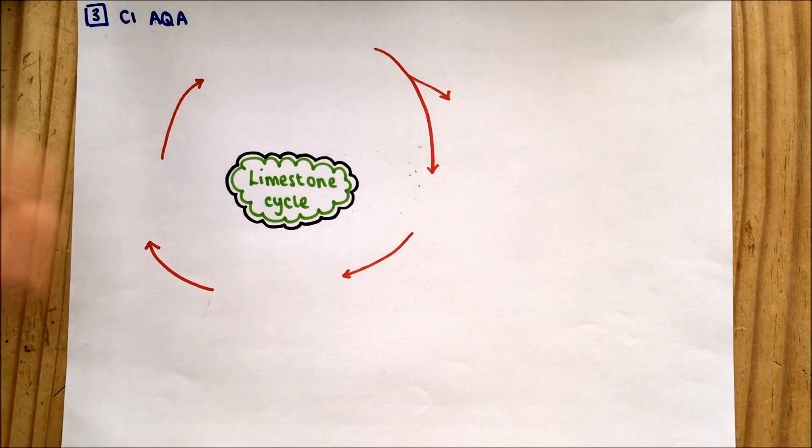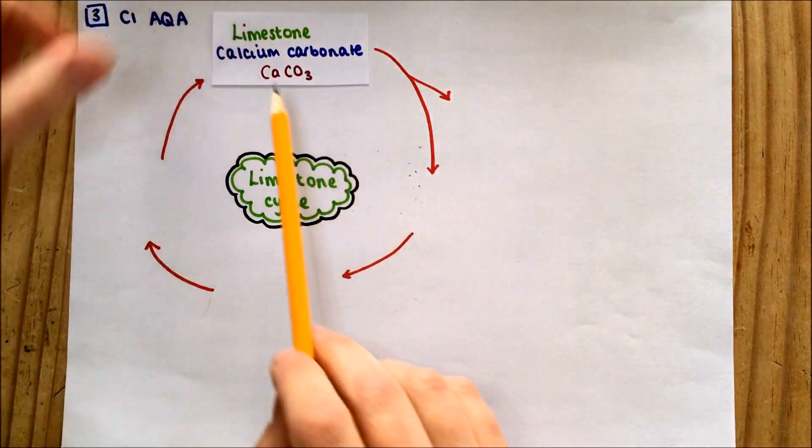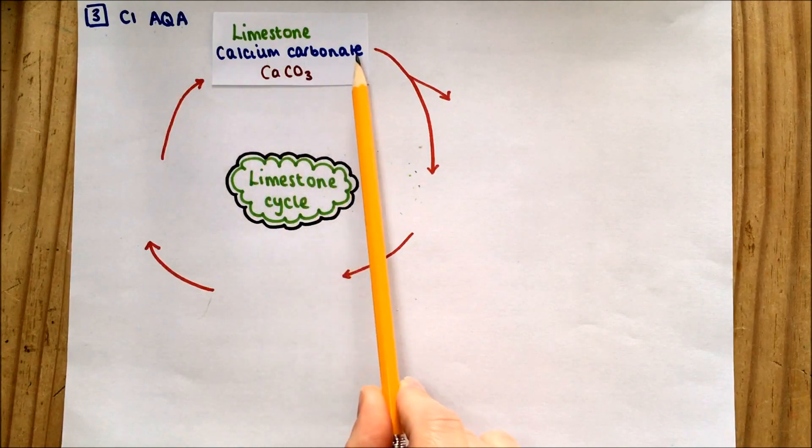We're going to start off with limestone. The chemical name for limestone - it's mainly made up of calcium carbonate or CaCO3. You need to know that chemical name and the formula because they often ask you about it in the exam.